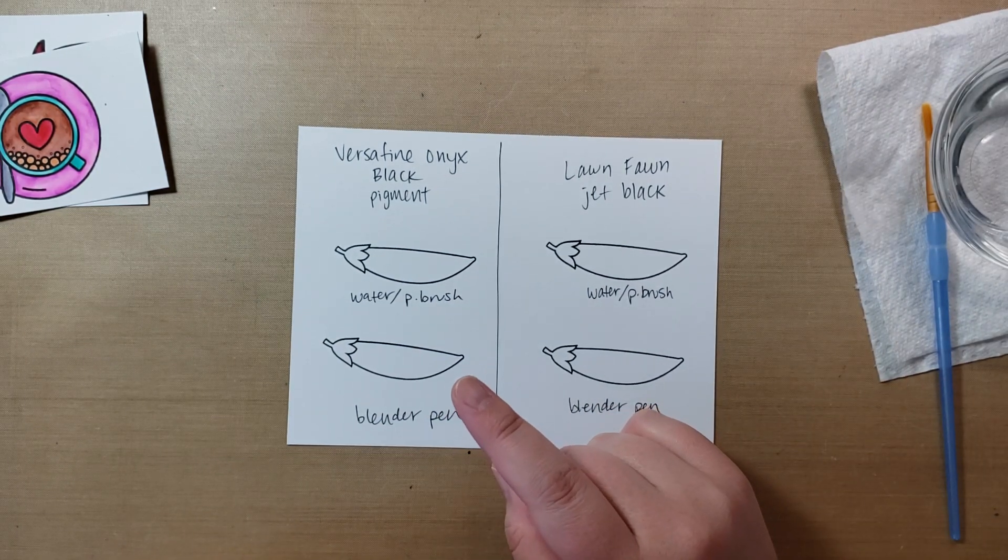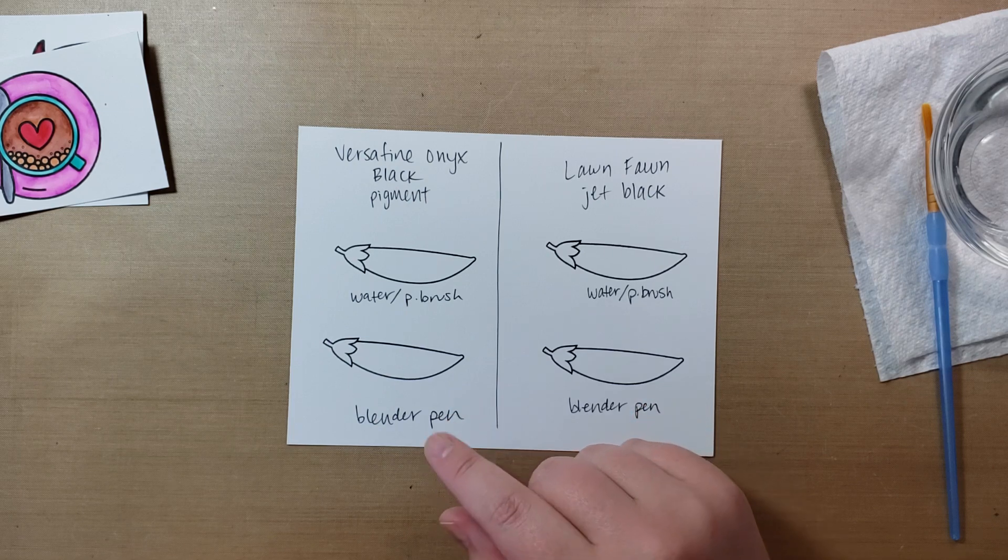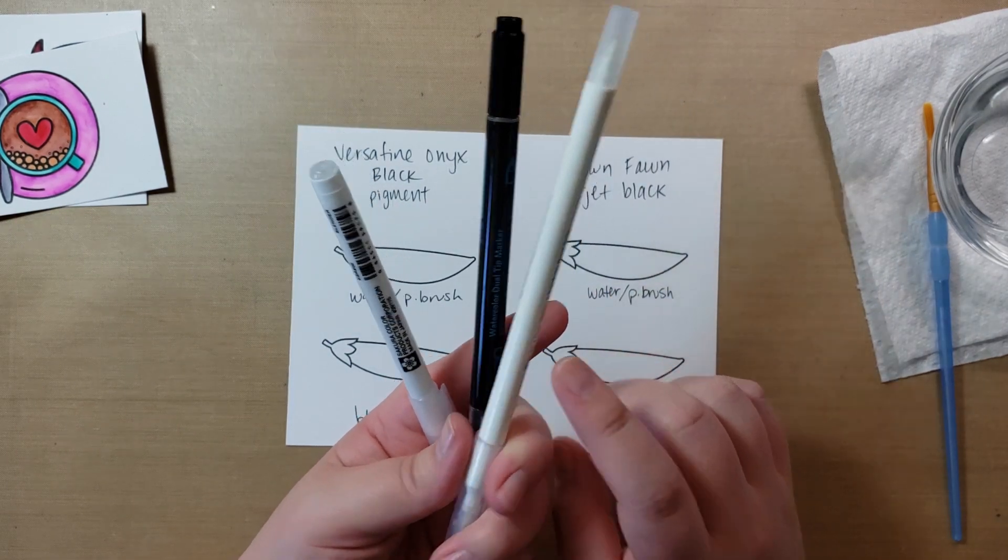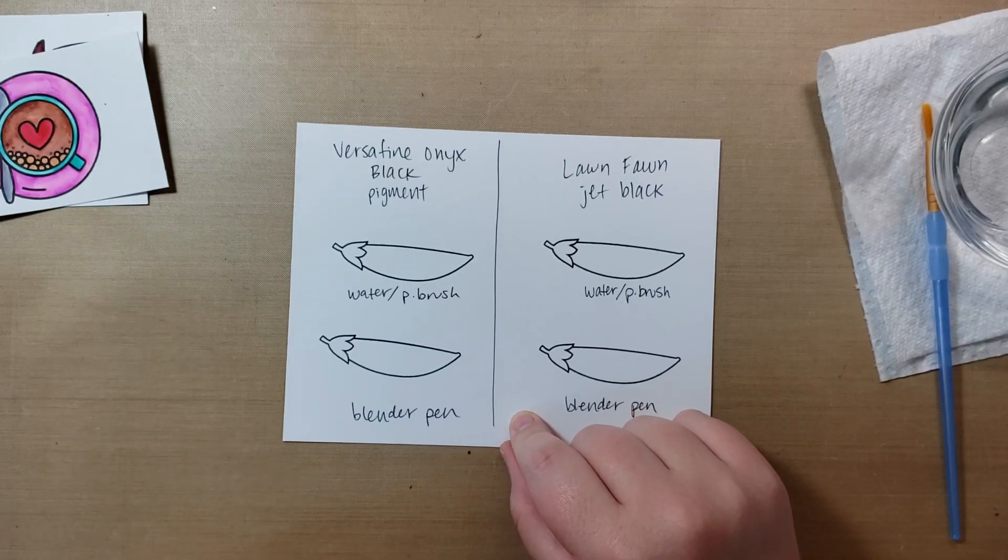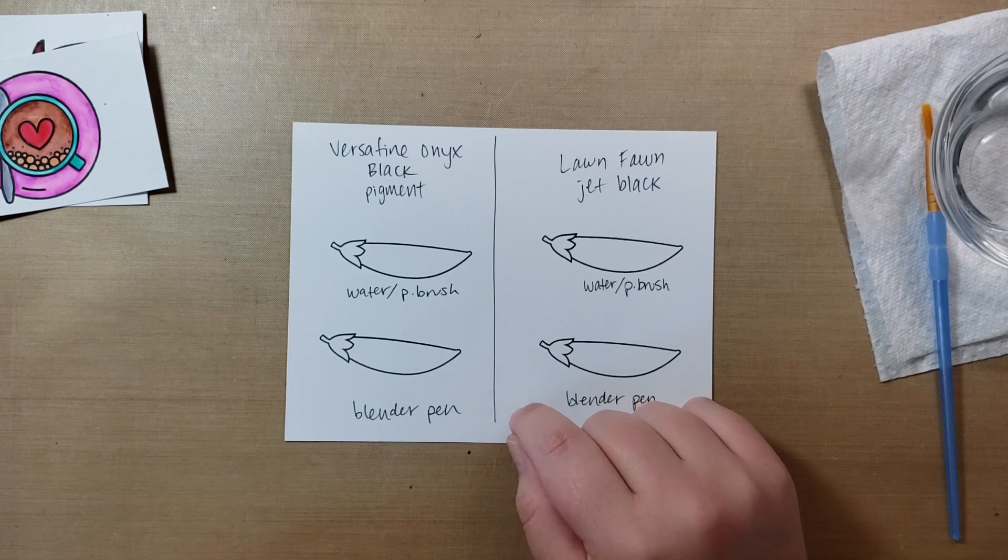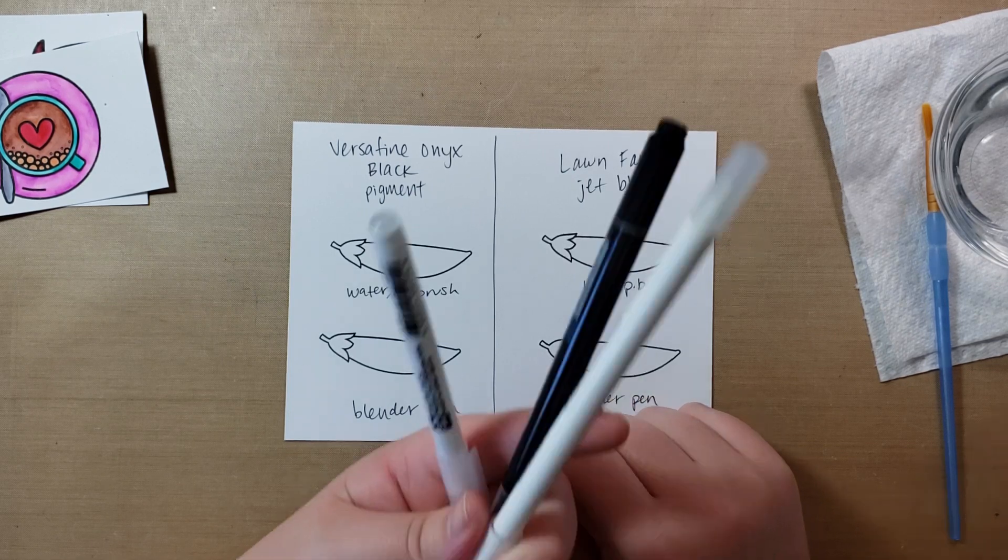I did only use Zig colors. The paper kind of pills up, and I don't appreciate it. This is Bristol Smooth, Strathmore, Bristol Smooth cardstock, which is good for the watercolor pens.